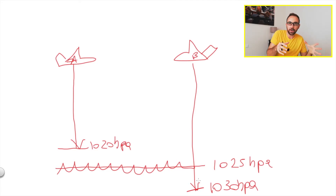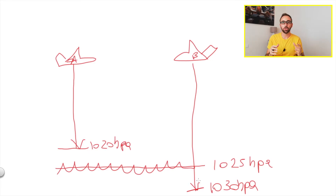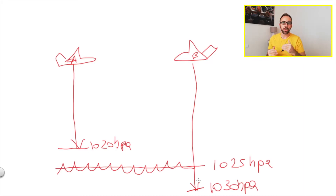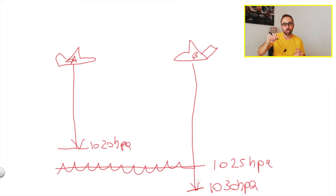When flying in the same pressure region you can use QNH and share the same reference. But when flying far from your area — say from Tenerife to Marrakesh — the mean sea level pressure changes constantly. You cannot call ATC every time to get the updated QNH; constant reference changes would cause too many problems. This is why the transition altitude was introduced.